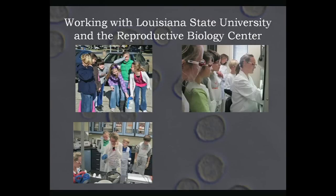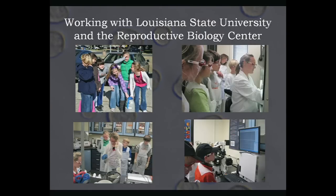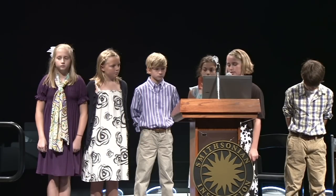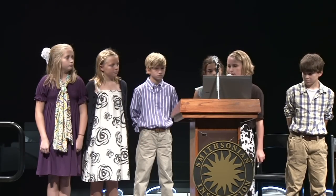Next, we took our myoblasts out of the liquid nitrogen and warmed them up to body temperature. Then we plated them, added more medium, and put them in the incubator for a little while. After that time, we took them out and put them in a hemocytometer, which is used to count cells. We used the hemocytometer to calculate how many myoblasts per milliliter. Once we had that information, we were able to pack it up and ship it to Cape Canaveral.